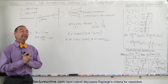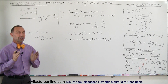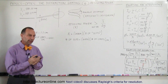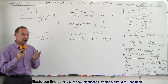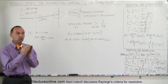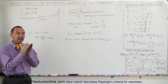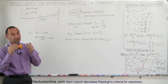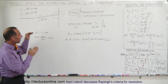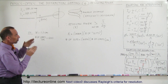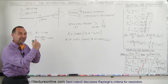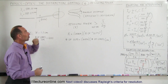Welcome to ElectronLine. Here we're going to talk about the resolving power of a diffraction grating. The resolving power of a diffraction grating refers to the ability to take two very closely spaced lines of very closely spaced wavelengths, send them through the diffraction grating and separate them sufficiently so they can be seen as two separate lines.